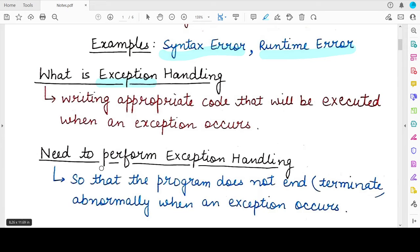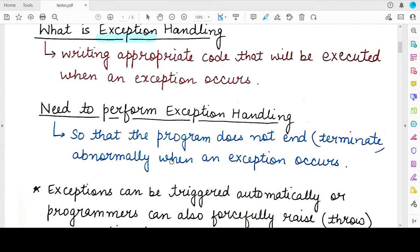And that is the need for performing exception handling. So why is exception handling required? Because even if an error occurs, you want the program to end and terminate gracefully and inform the user of the program what happened, what caused the error and some tips on how that error can be handled. So that is why we need to perform exception handling.